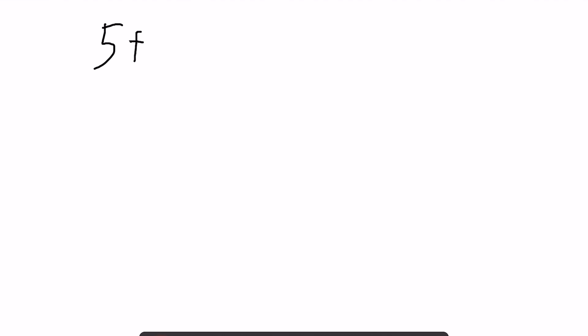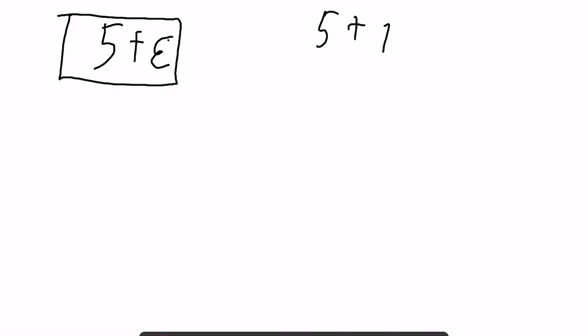We can have numbers in the hyperreal number system like five plus epsilon. You can think about the notation kind of the same way that you do complex numbers — in complex numbers we have the i unit and you can have five plus i. Well, in the hyperreal numbers we can have five plus epsilon. That is the number five with an infinitely small appendage attached. We can have five plus four epsilon, or five minus epsilon squared.